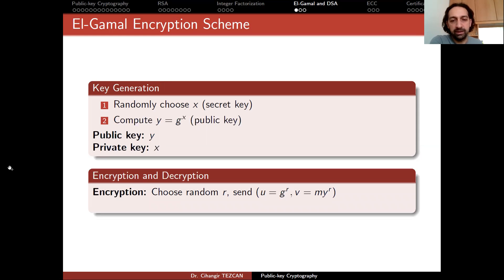So how does encryption and decryption work? When somebody wants to send you a message, they choose a random value R and send you G to the power R, which is U, and M times Y to the power R, which equals V.